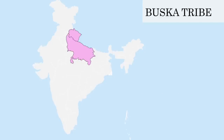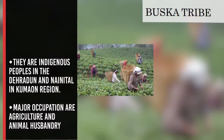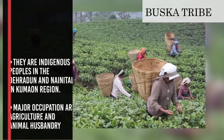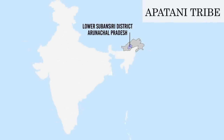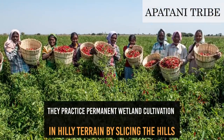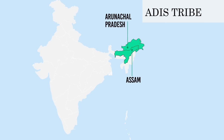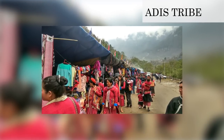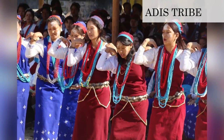Bhuksa Tribe: they are one of the primitive tribal groups of India found in Uttarakhand and Uttar Pradesh. They are indigenous people of the Dehradun and Nyanitar in the Kumaon region. The major occupation of this tribe is agriculture and animal husbandry. Appa Tani or Tani Tribe: they are settled agriculturists inhabiting the valley around Zero, the headquarters of the Lower Subansiri district in Arunachal Pradesh. They practice permanent wetland cultivation in the hilly terrain by terracing the hills. Addis or Bokar Loba Tribe: this tribe is found in Arunachal Pradesh and Assam, and are divided into two major categories: Bogum and Bomas. They are democratic by nature and organize a village council called Kibang.